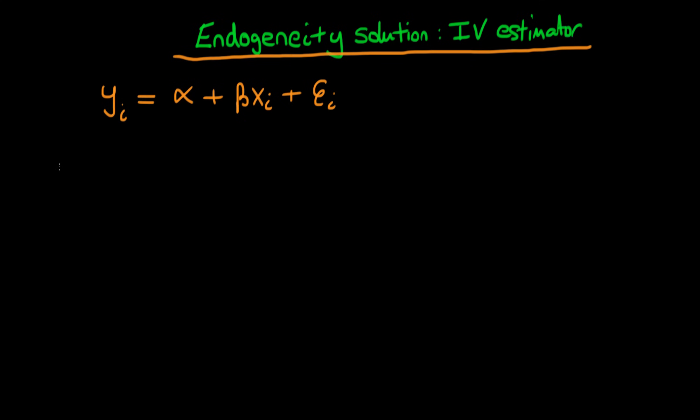Remember that one of the Gauss-Markov conditions was that the expectation of this error term given my independent variables x_i has to equal 0, and we talked about how this might not be the case under three different circumstances.